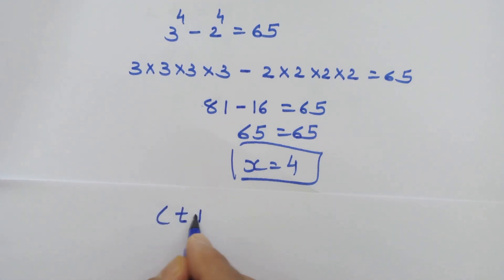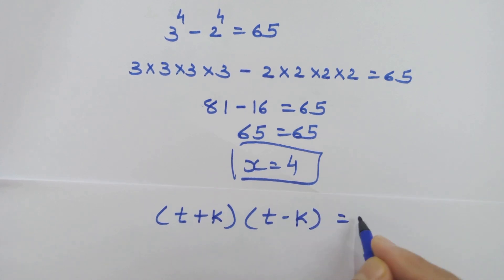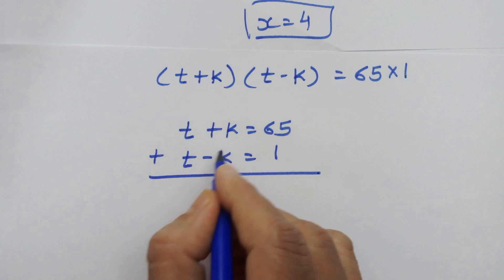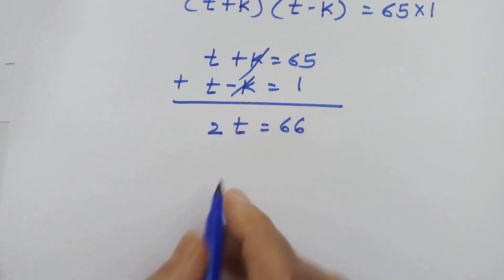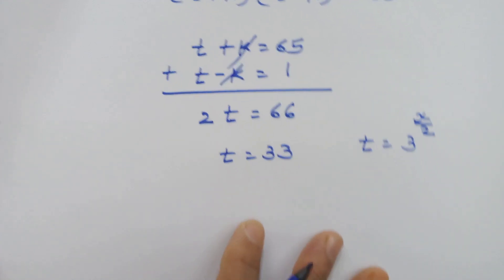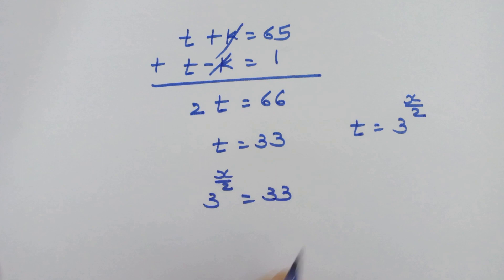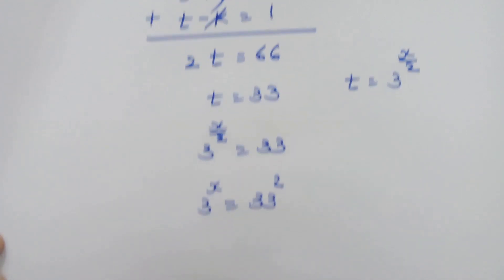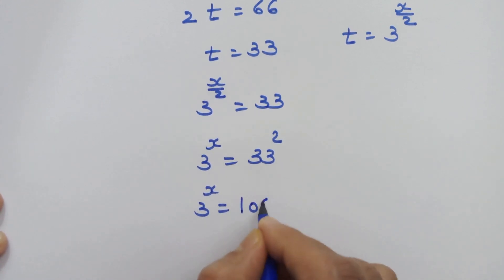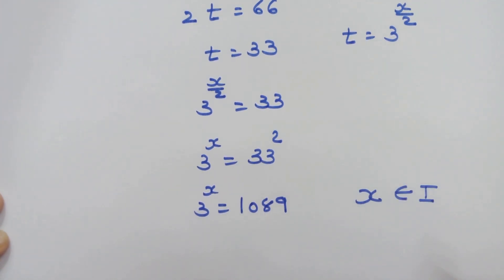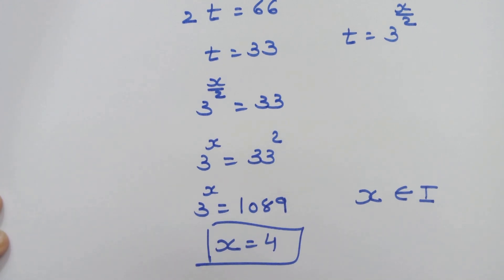Now let's check the case t plus k into t minus k equals 65 into 1: t plus k equals 65 and t minus k equals 1. These two cancel giving 2t equals 66, so t equals 33. Since t equals 3 raised to x upon 2, we have 3 raised to x upon 2 equals 33. Squaring both sides gives 3 raised to x equals 33 squared, which is 1089. This results in a non-integer solution for x, and since x must be an integer, x equals 4 is the correct answer. Thanks for watching, see you in the next one, bye bye.